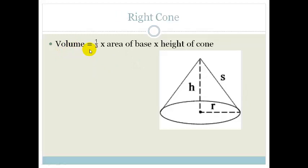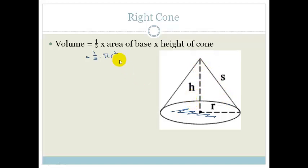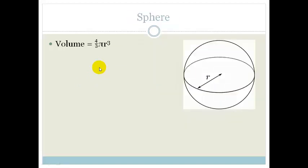For a cone, it's a third times the area of the base times the height of the cone, where the area of the base is a circle, so it's pi R squared — and we're talking about the perpendicular height H, not the slant height. Finally, the sphere: the volume of a sphere is 4 over 3 pi R cubed.